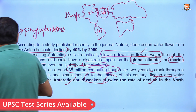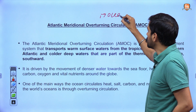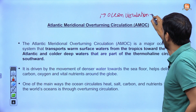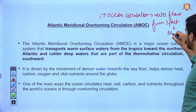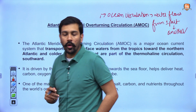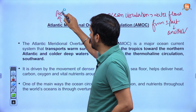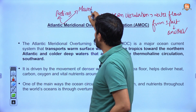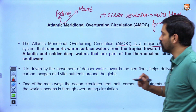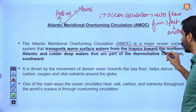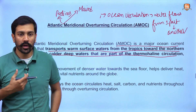We need to understand the concept of ocean circulation and water flows. In this context, we need to know what AMOC — Atlantic Meridional Overturning Circulation — is. This can be asked in your prelims as well as mains examination. AMOC is a major circulation system that transports warm surface water from the tropics towards the northern Atlantic, and cold deep water — as part of the thermohaline circulation — southwards.